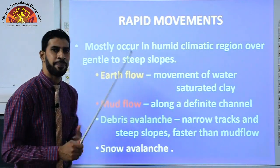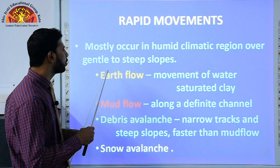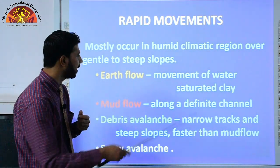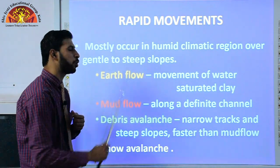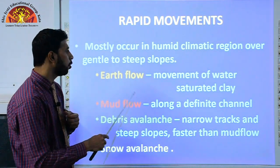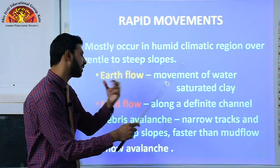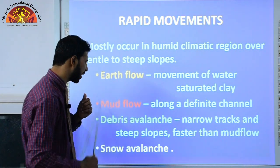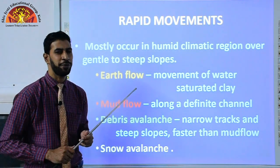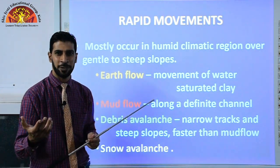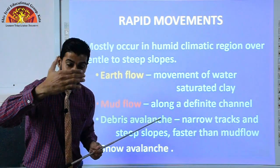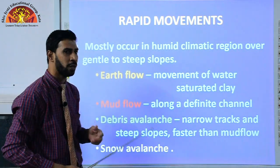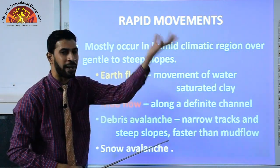Rapid movements mostly occur in humid climate regions over gentle or steep slopes. These include earth flow — movement of water-saturated clay — and mud flow along a definite channel. A great example of mud flow is the Kedarnath disaster, where mud flowed along with water rapidly.